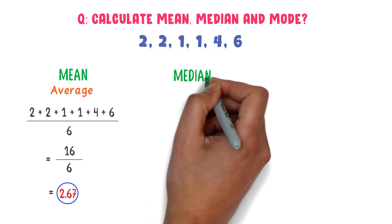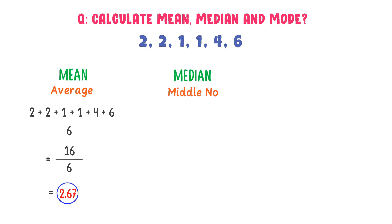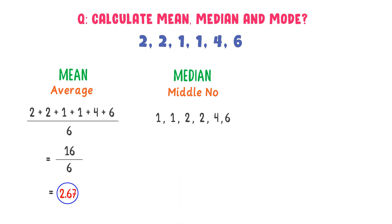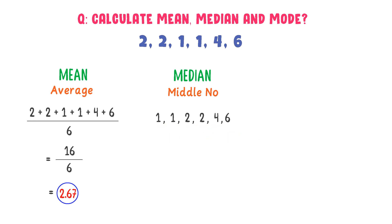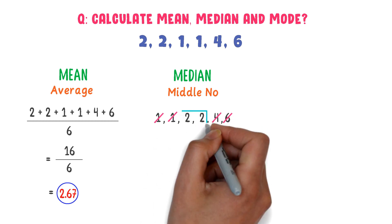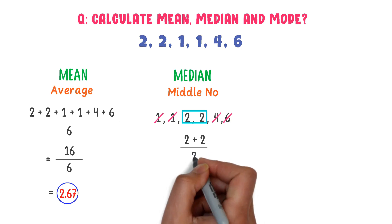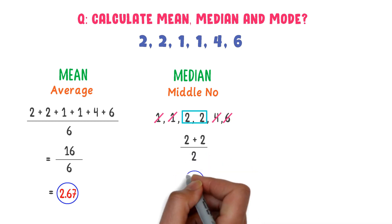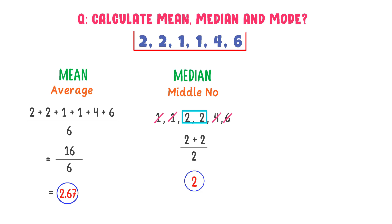Secondly, we know that median is the middle number, so I arrange all these numbers in ascending order: 1, 1, 2, 2, 2, 4, 6. There are 6 numbers present in this data set, and 6 is an even number. In case of even numbers, we use the trick: I cancel one number from the left side and one from the right side, then cancel the second number from each side. Now I find the mean of these two remaining numbers. 2 plus 2 divided by 2 is equal to 2. So the median of this data set is 2.